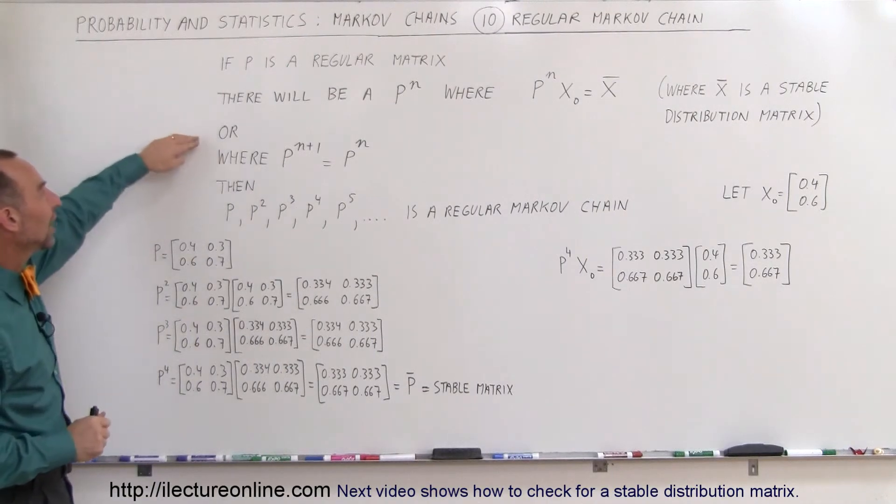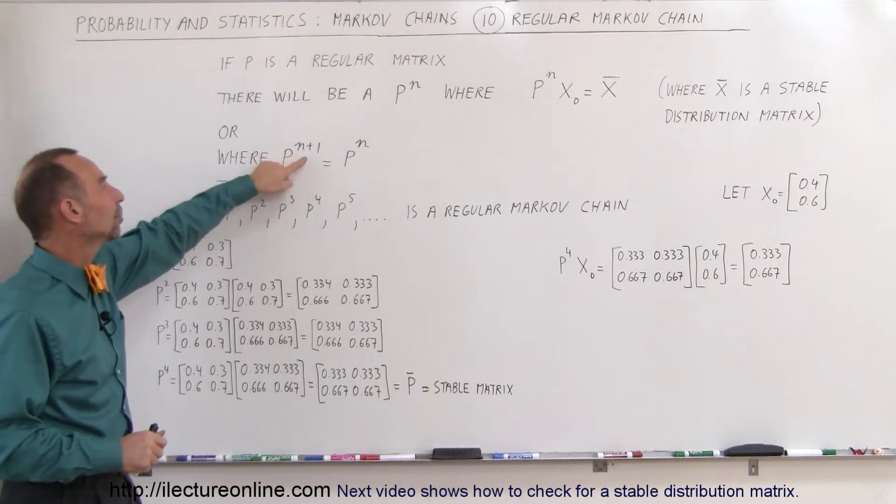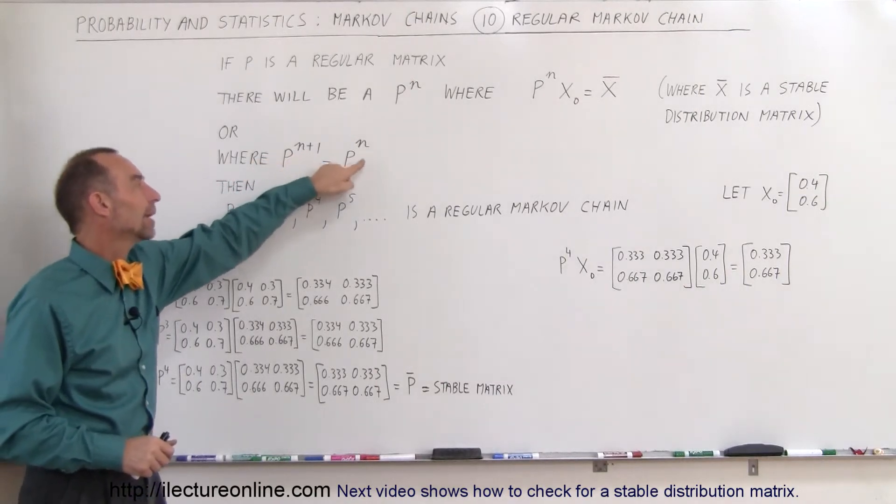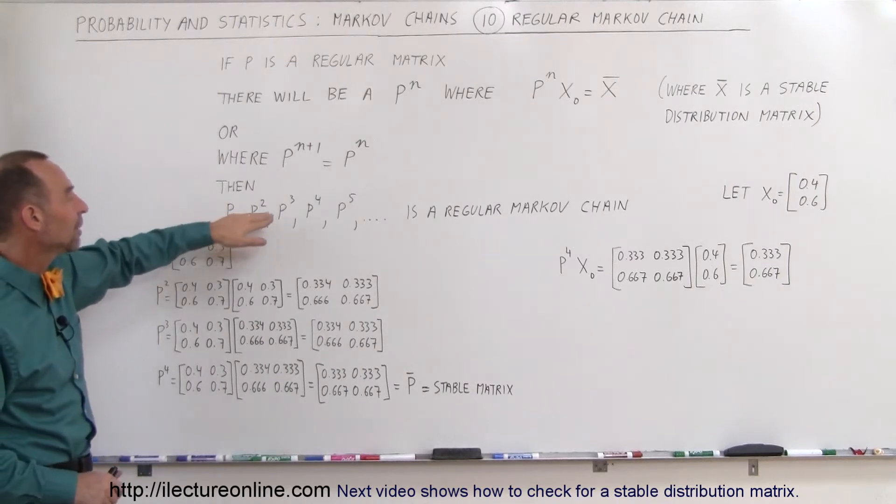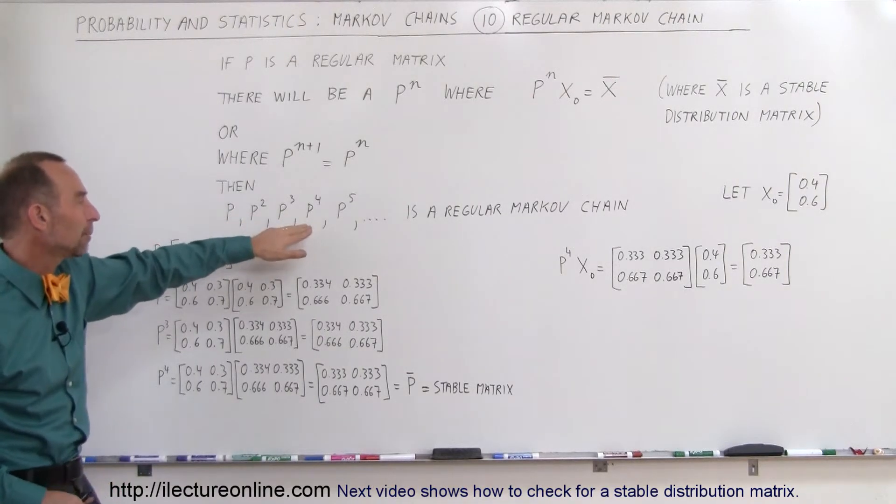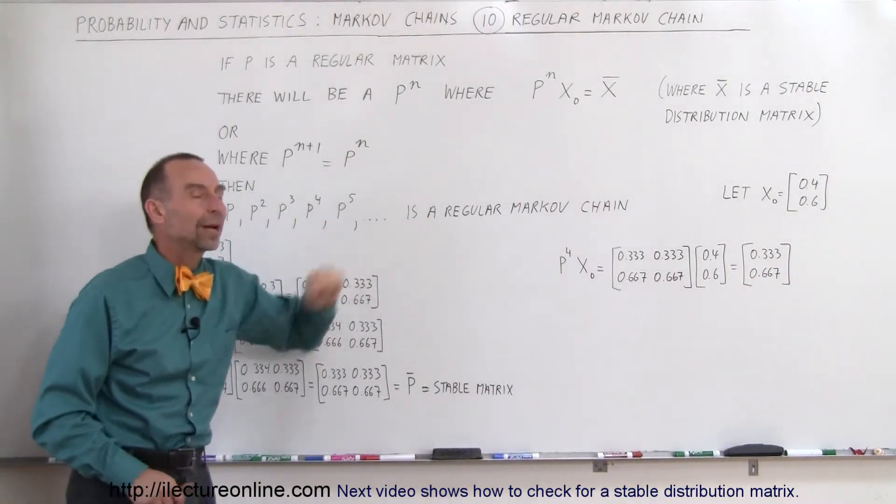We can also say if we have P^(n+1) and it's equal to P^n, then we know that P, P^2, P^3, P^4, P^5, and so forth is a regular Markov chain.